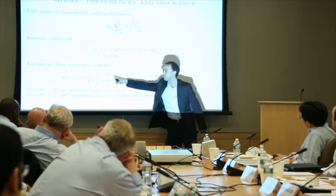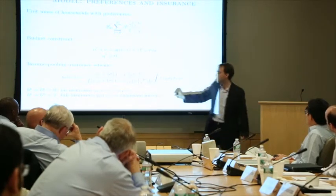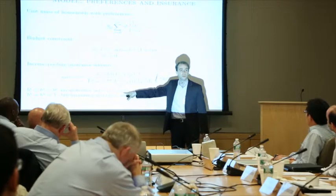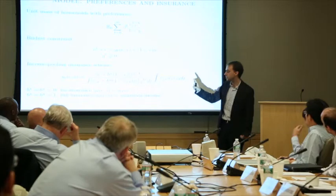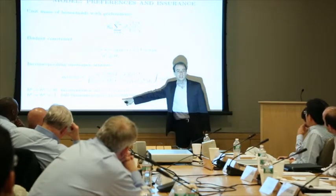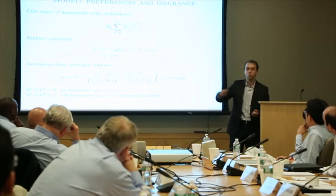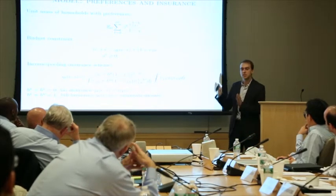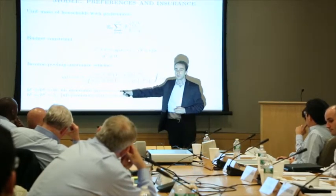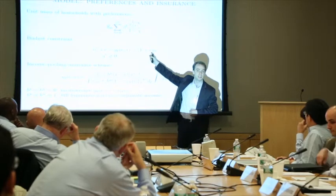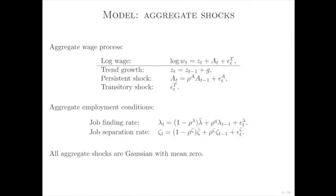Setting both B parameters to zero gives no insurance — what you get is just the aggregate wage times your employment status times your skill. Setting both parameters to one gives full insurance, where everyone gets an equal share of aggregate income. By varying these parameters we can go midway. What I would call self-insurance is the case where households use assets to smooth their consumption. What I would call full insurance is the case where the B parameters equal one.